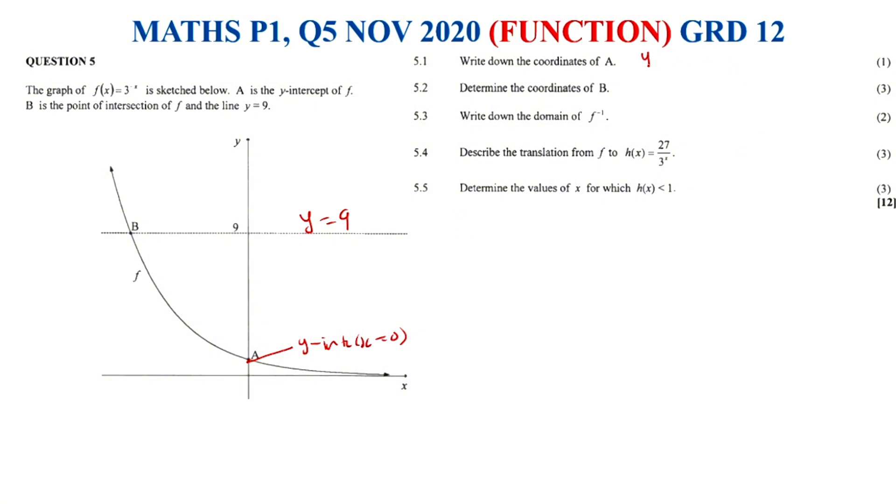5.1, coordinates of A. We said it's our y-intercept and therefore we get it when x equals 0. So if we take f(x), we get it when x equals 0. It is 3 to the power of negative 0. Anything to the power of 0 is going to give us 1, and therefore the coordinates of A will be (0, 1). And that's how you would get your 1 mark right there.